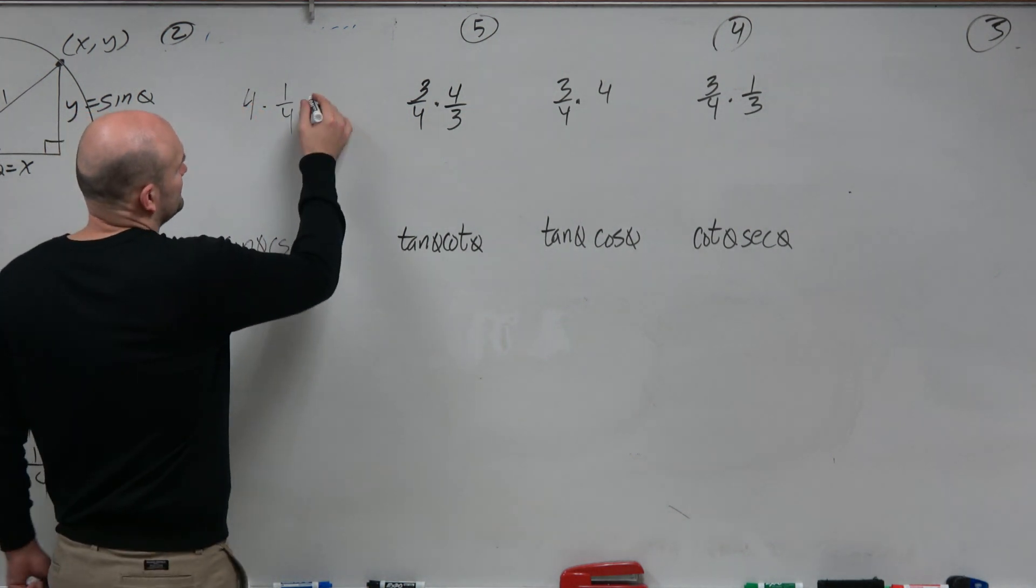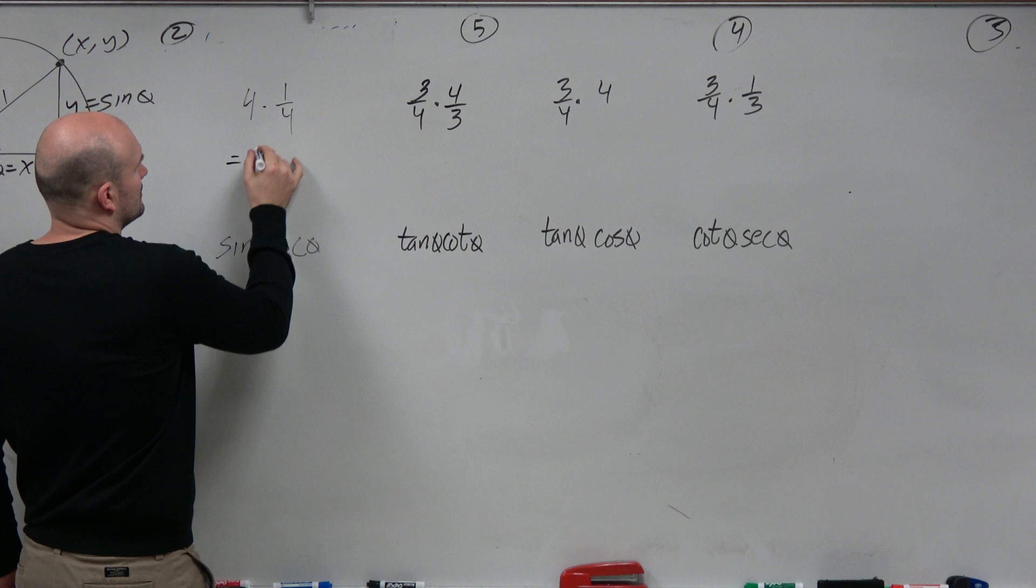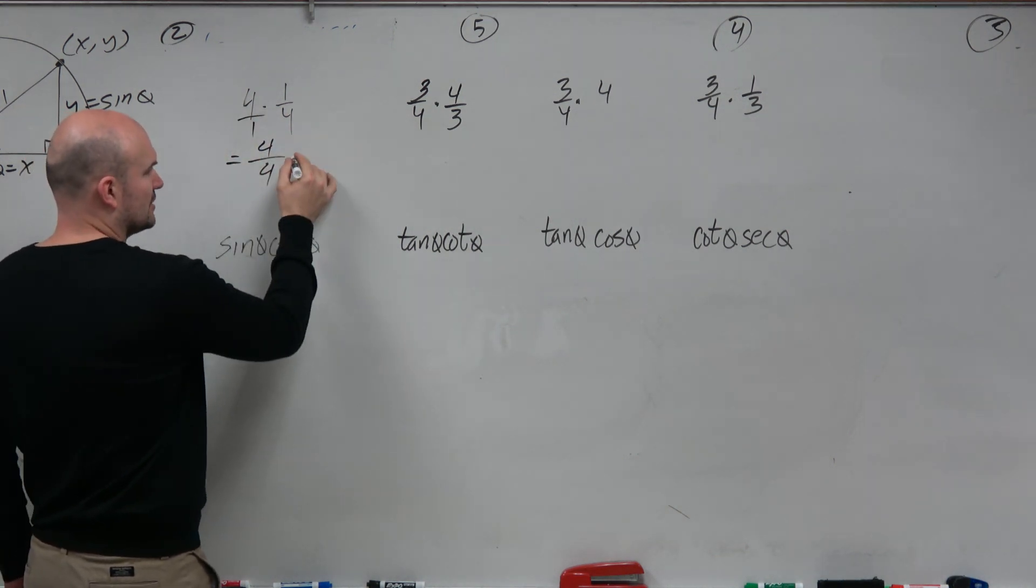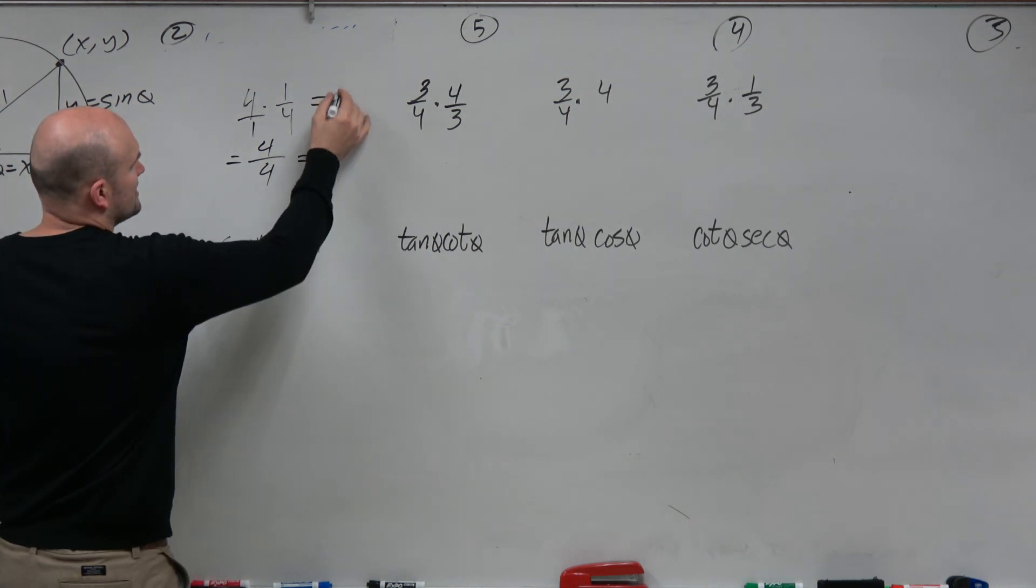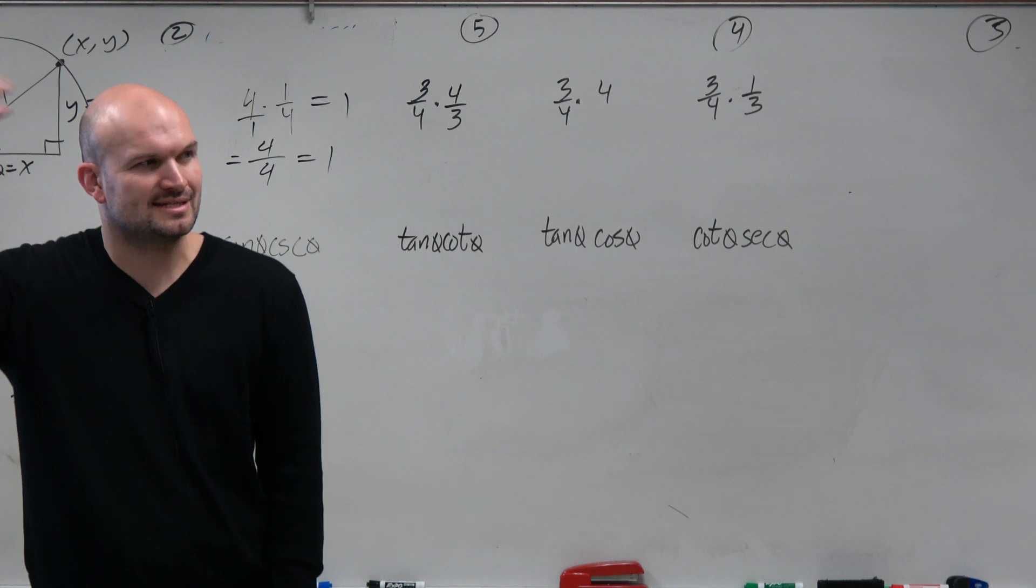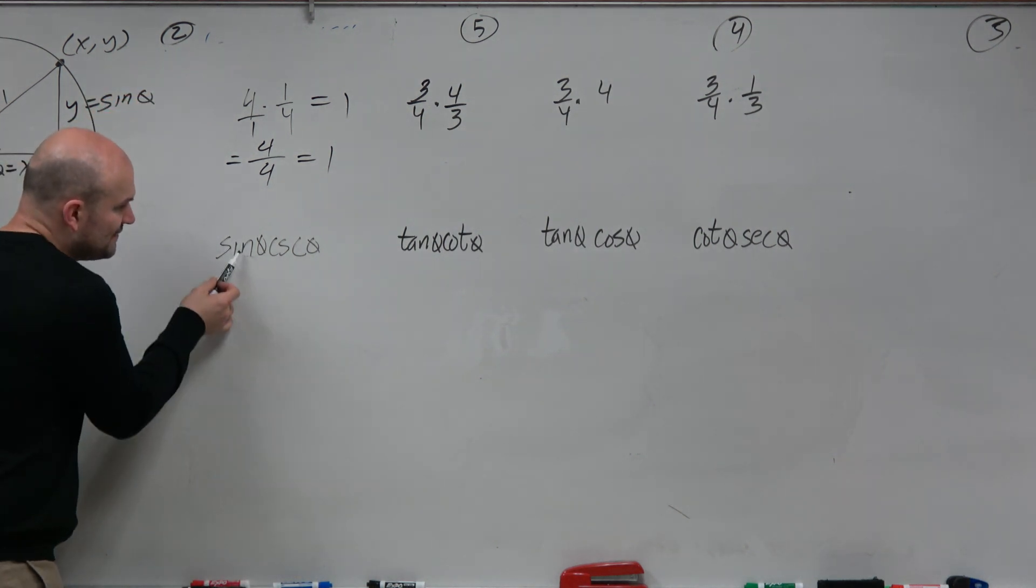But if we just want to see, we'd multiply 4 times 1 is 4. You could write this as over 1, multiply straight across. And then again, we can see the answer is 1. All right? So we could apply the multiplication. But hopefully you guys recognize it's already equal to 1.